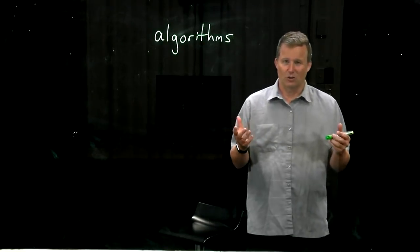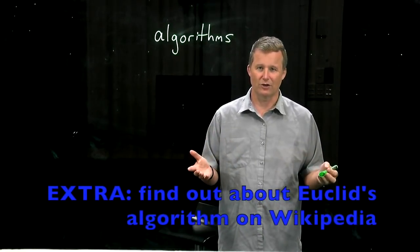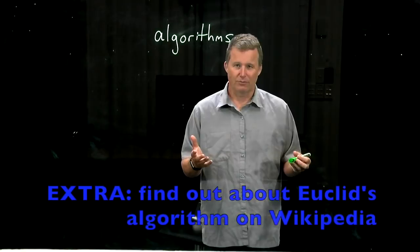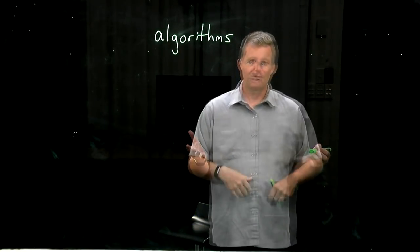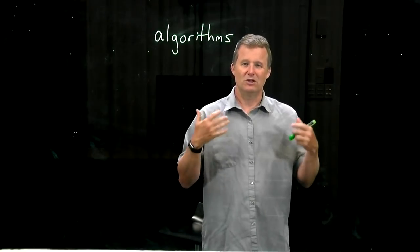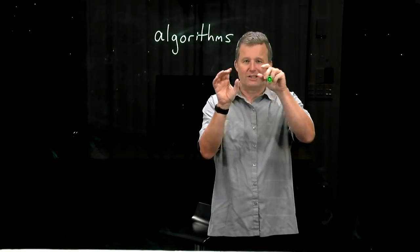Getting back to a more mathematical kind of problem, Euclid over 2,000 years ago gave an algorithm for finding the greatest common divisor of two positive integers. And this is a much better algorithm than the usual primary school method that involves factorizing numbers into primes.